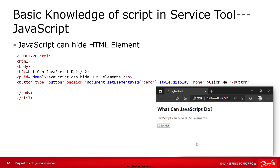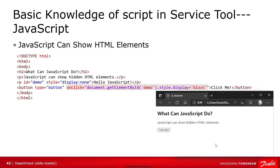JavaScript can hide HTML elements. In this example, we find the HTML element with the ID 'demo' and get its display property, setting it to a new value of 'none'. So when we click on this button in the browser, the paragraph is hidden. In the same way, JavaScript can show HTML elements. In this example, we use JavaScript to change the display property from 'none' to 'block', so this paragraph will appear when we click on this button.